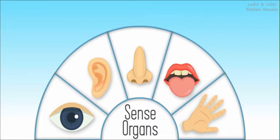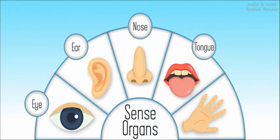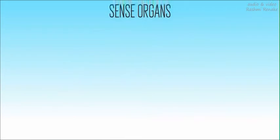Our sense organs include eyes, ears, nose, tongue, and skin. Now let us see these senses one by one.